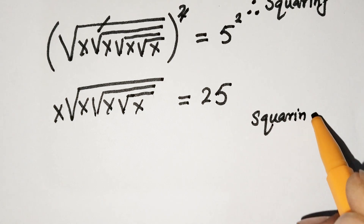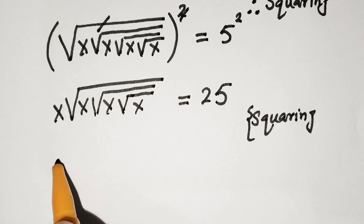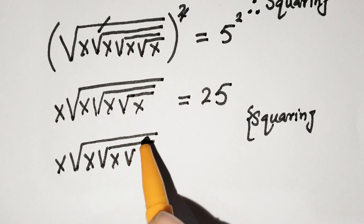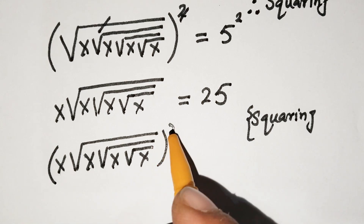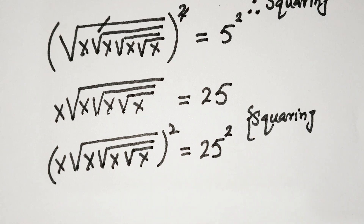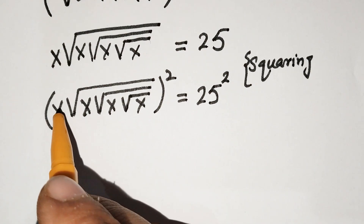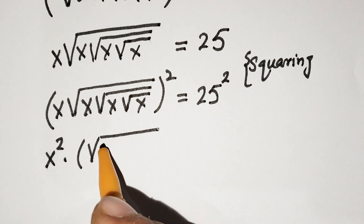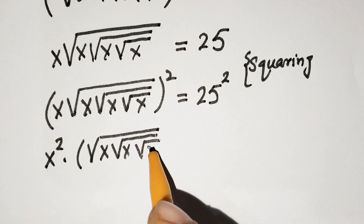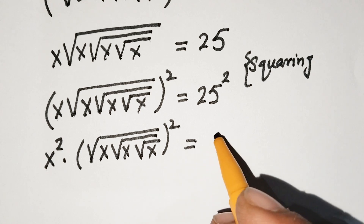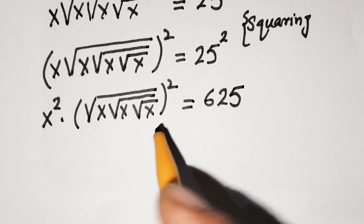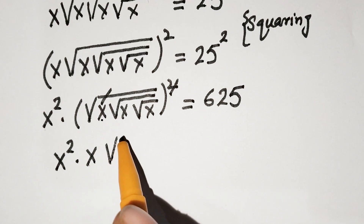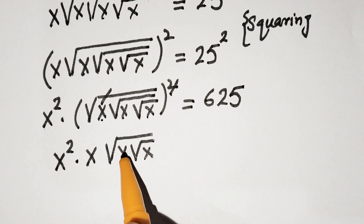Squaring again, we get x times square root of x times square root of x times square root of x, all squared, equal to 25 squared. Taking the square of this separately, we get x squared times square root of x times square root of x times square root of x, also squared, which is equal to 625. Canceling the square with the root gives us x squared times x times square root of x times square root of x.